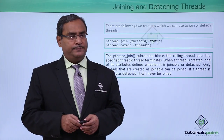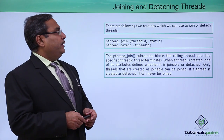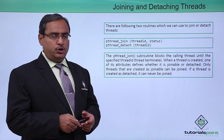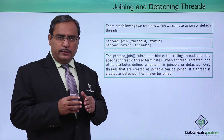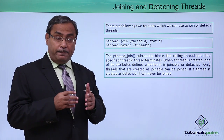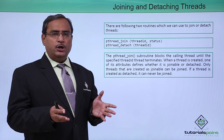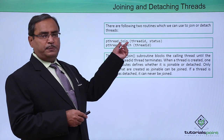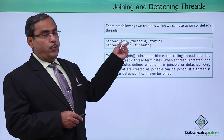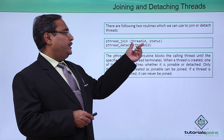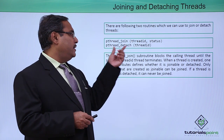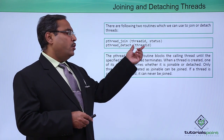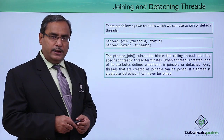Joining and detaching threads: there are two routines we can use to join or detach threads. Two threads can join, and their execution will become dependent. In the reverse way, two threads can get detached. pthread_join is the function with which we can join two threads, passing the thread ID and the status. In the case of pthread_detach, this function requires only the thread ID as input argument.